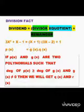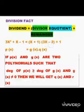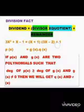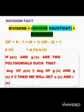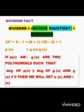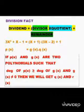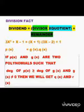Dividend is 3x² + x - 1. Divisor is x + 1. Quotient is 3x - 2. And remainder is 1. So if P(x) and G(x) are two polynomials here, that is, 3x² + x - 1 and x + 1 are two polynomials.